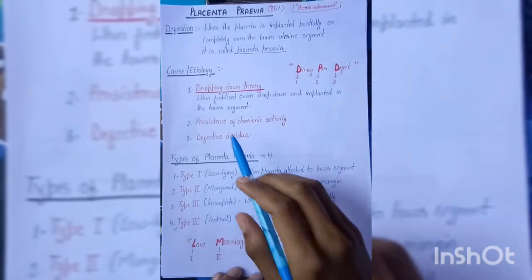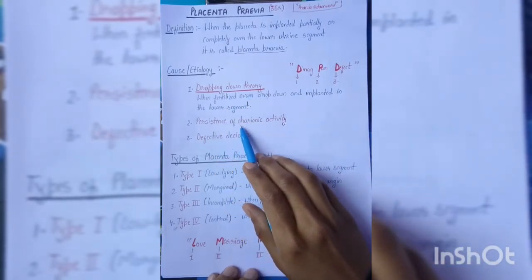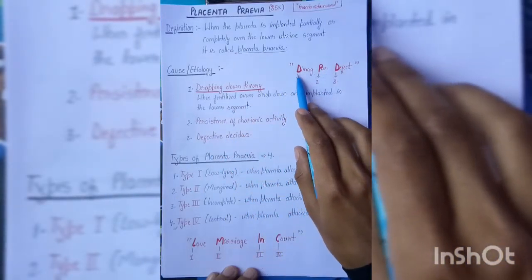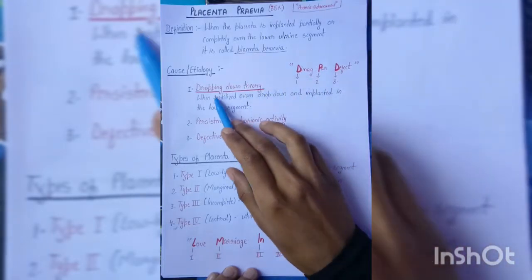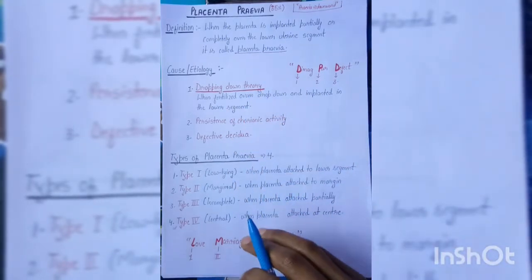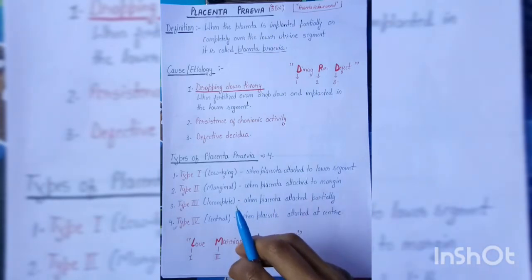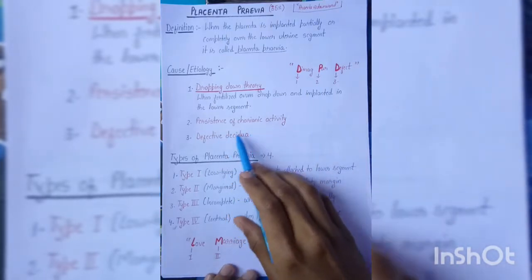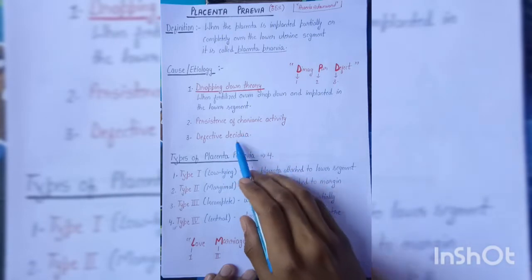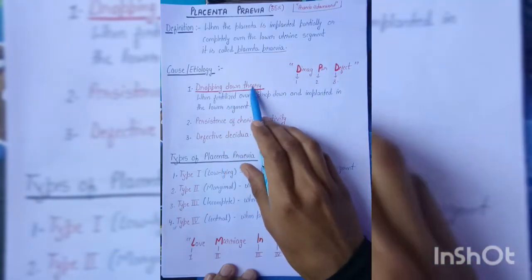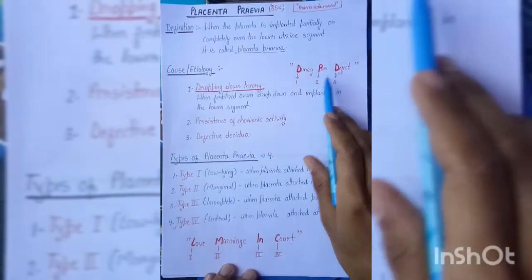The causes of placenta previa are three: dropping down theory, persistence of chorionic activity, and defective decidua. We can remember this with the mnemonic 'DPD' — D for dropping down theory (fertilized ovum drops down and implants in the lower segment), P for persistence of chorionic activity, and D for defective decidua.